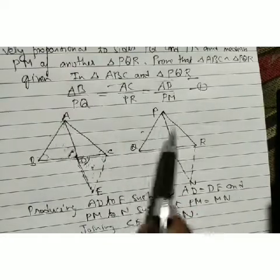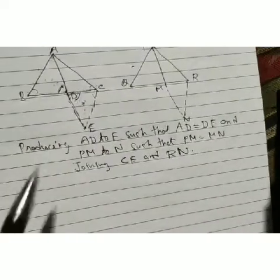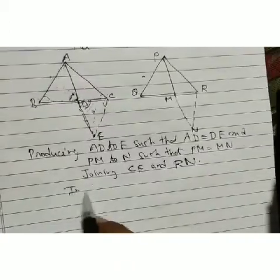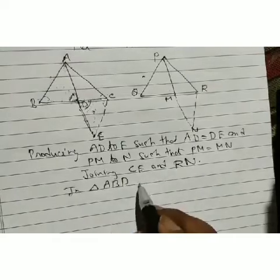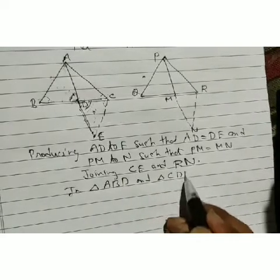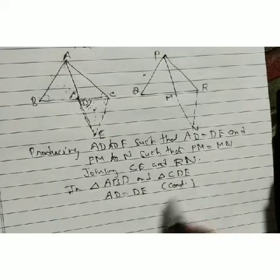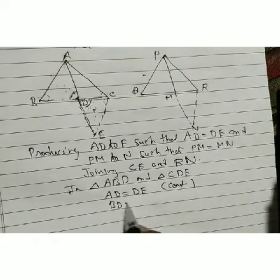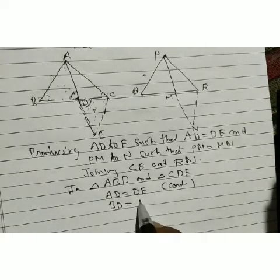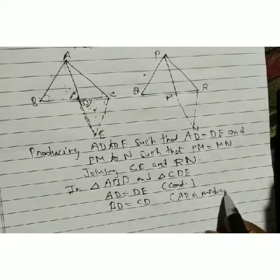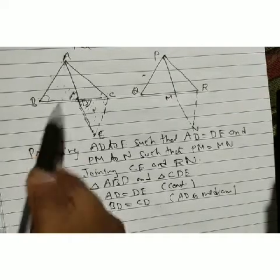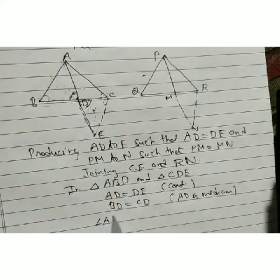Now we take the complete triangles AEC and PNR. We need to show these are similar. Since AD is the median and by construction AE = 2·AD and PN = 2·PM, we have AE/PN = AD/PM, which is given.